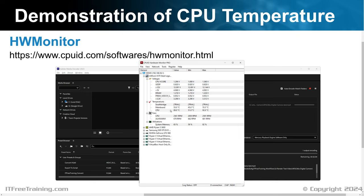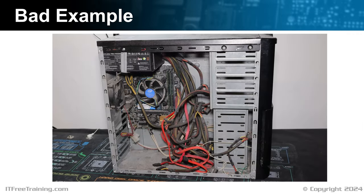Let's have a closer look at what can cause cooling problems. This computer has been put together very badly. Poor cooling results in the components running hotter than they should, which reduces the performance of the computer, reduces the lifespan of the components, and makes it more subject to crashes. The first thing to notice is that the side panel is missing. Computer cases work by moving air from the front to the back — without the side panel, this prevents airflow moving through the computer case properly. You can also see that no cable management has been performed. Poor cable management reduces airflow and risks the cables getting stuck in the fans.